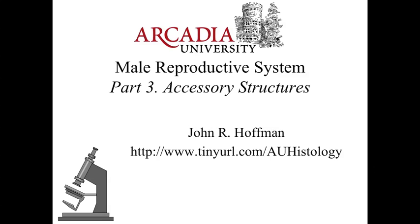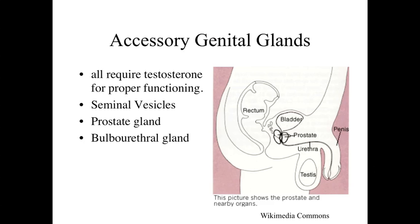Hello, and welcome to part 3 of our lecture series on the male reproductive system. In part 3, we're going to be taking a look at the accessory structures associated with the male reproductive system. We're going to start out with the accessory genital glands — the seminal vesicles, the prostate gland, and the bulbourethral gland — and then finally the penile structure. The important thing to keep in mind is that testosterone is required for the proper functioning of all these organs.